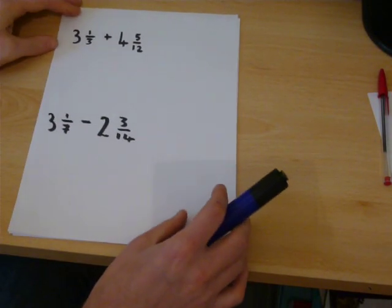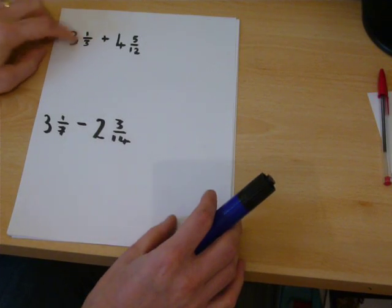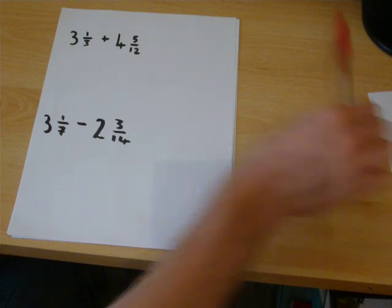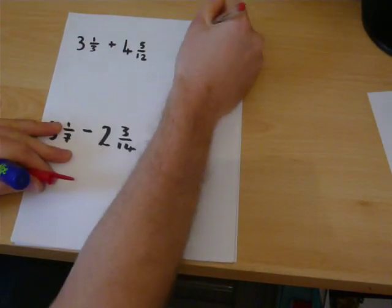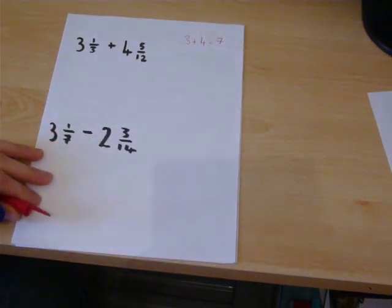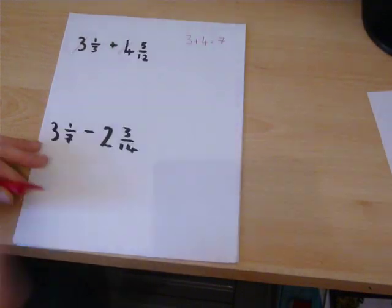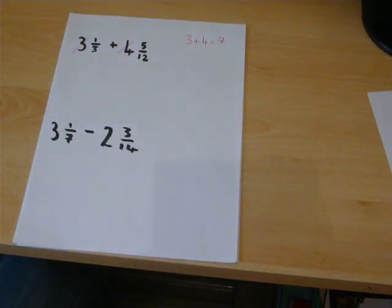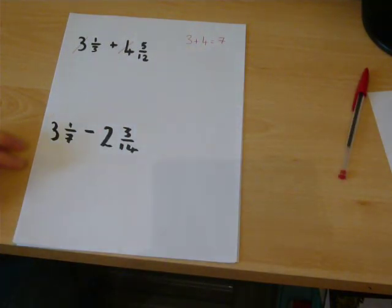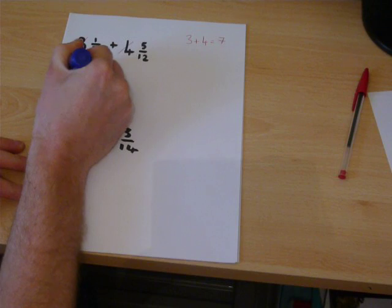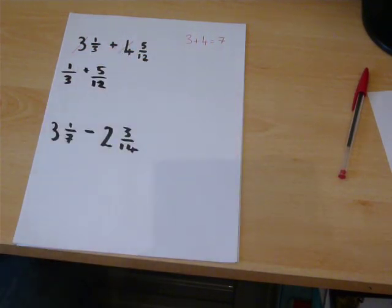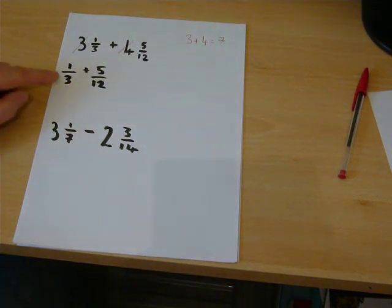We can also add and subtract mixed fractions. We can deal with the large numbers first. 3 plus 4 equals 7. So we have dealt with those already. But the 1 third and the 5 twelfths must be done as normal fractions. So 1 third plus 5 twelfths.